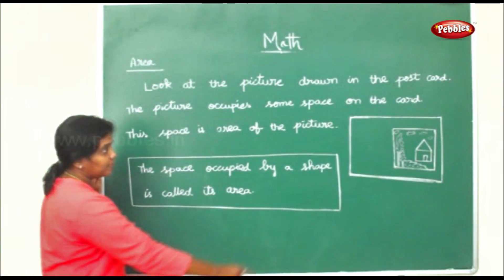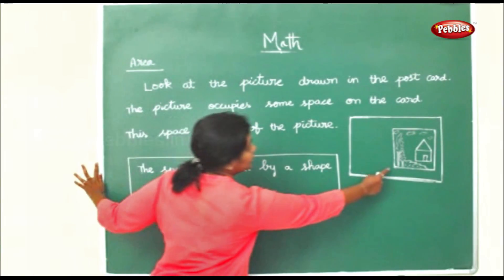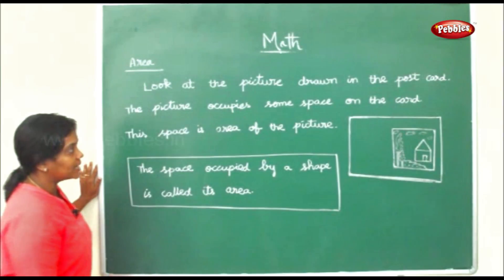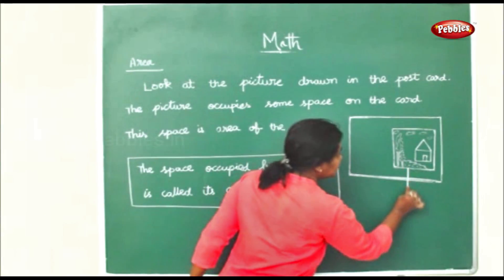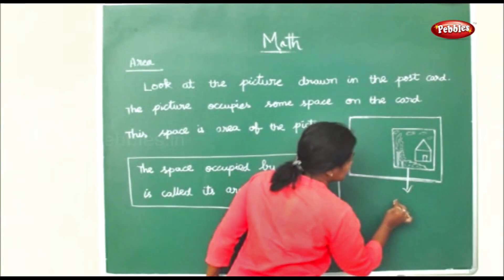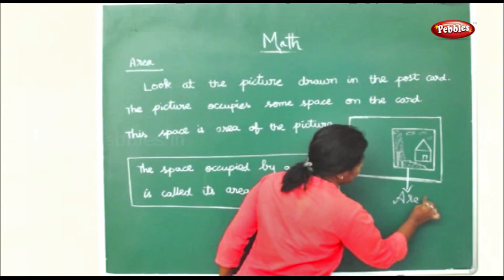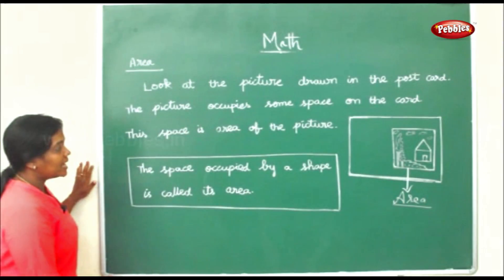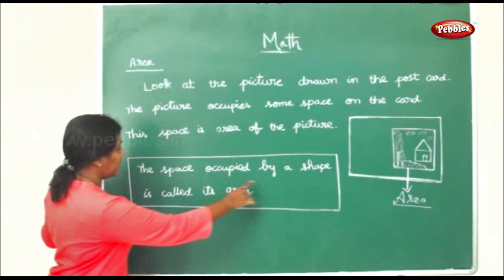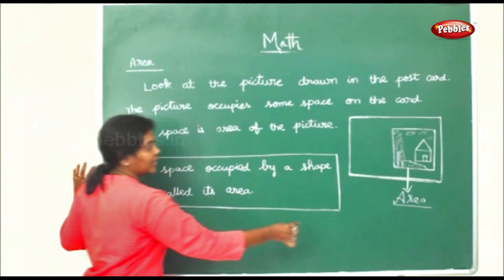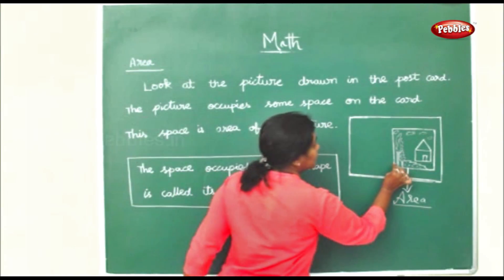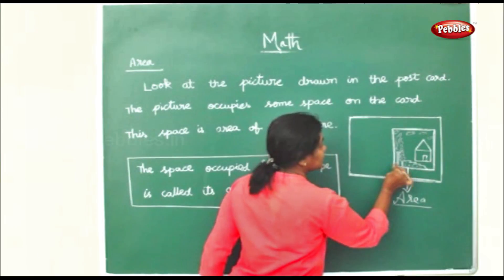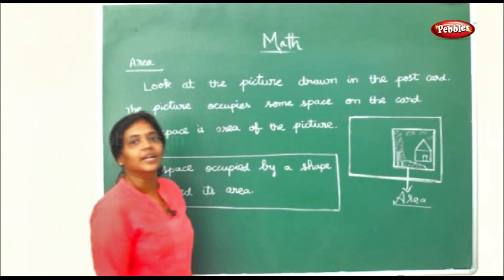Look at this picture drawn on this postcard. The picture occupies some space. This space is called the area. The space occupied by a shape is called the area.